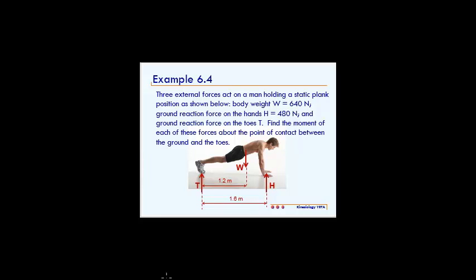This is example 6.4. It reads, three external forces act on a man holding a static plank position as shown below. His body weight W is 640 newtons, the ground reaction force on the hands H is 480 newtons, and the ground reaction force on the toes T. Find the moment of each of these forces about the point of contact between the ground and the toes.